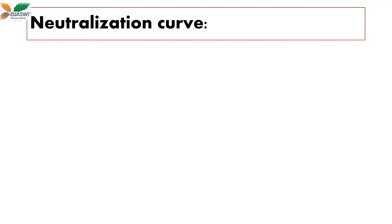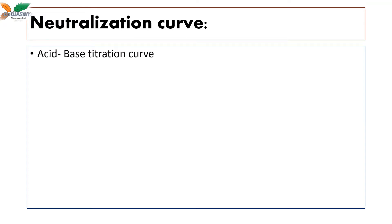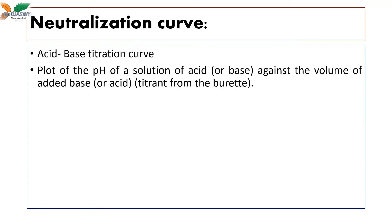Let us understand what is a neutralization curve. This term we use in case of acid-base titration and thus it is also called as an acid-base titration curve. It is a plot — a graph — where the y-axis has the pH of the solution and the x-axis has the volume of the titrant added.